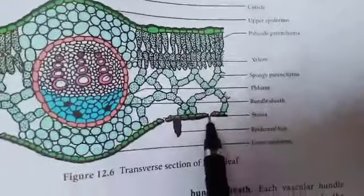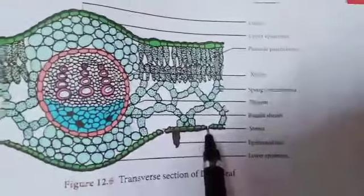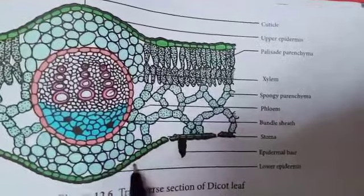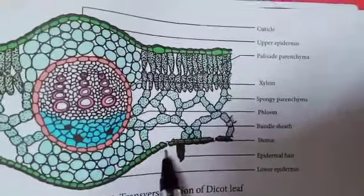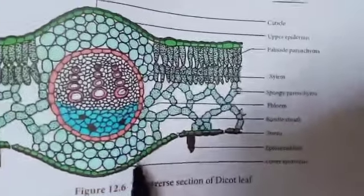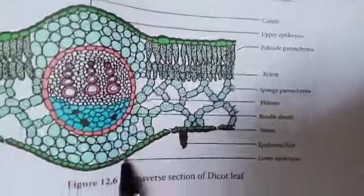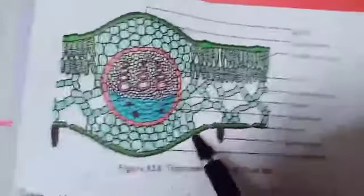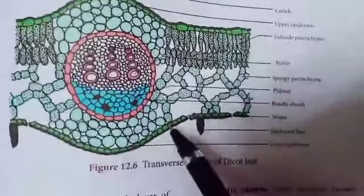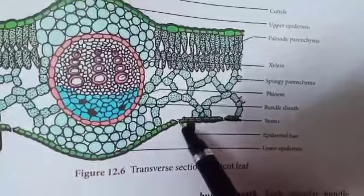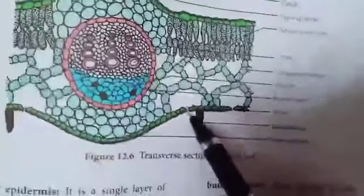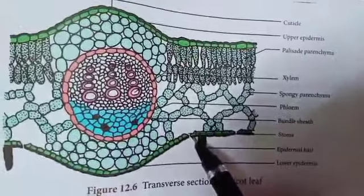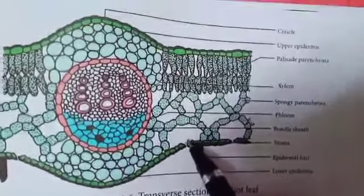Lower epidermis is also made up of parenchyma cells with intercellular spaces. A thin cuticle is present and it contains numerous stomata compared to the upper epidermis. Chloroplasts are present only in the guard cells. The lower epidermis helps in gaseous exchange.